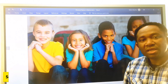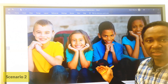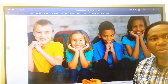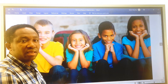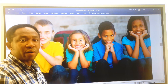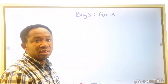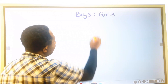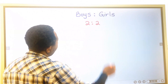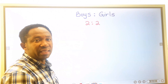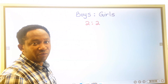Next, let's consider this example. We have four kids — two boys and two girls. In this example, we are going to represent the ratio. For the boys to girls, it will be two to two. And this is part-to-part.